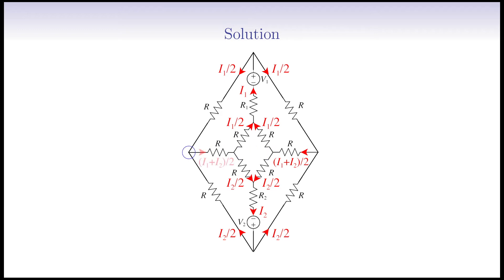The remaining currents on the left part of the circuit can be completed by symmetry. We've found all the currents running through branches in terms of only two unknowns, I1 and I2. Now, since we have two unknown variables, we need to find two independent equations. So in order to find currents I1 and I2, we have to apply KVL to two independent loops. By independent loops, I mean we shouldn't write KVL for the same symmetric loops on the left and right sides. Thus, we choose one loop from the top half and one loop from the bottom half of the circuit.